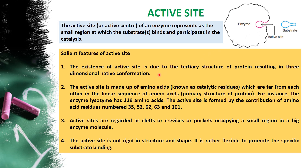For example, lysozyme is an enzyme which contains 129 amino acids. Among the 129 amino acids, amino acids numbered 35, 52, 62, 63, and 101 — these 5 amino acids, when the protein takes its tertiary structure, come together to form the active site. These particular amino acid positions occupy the active site in the case of lysozyme.